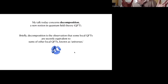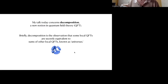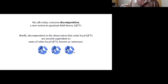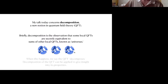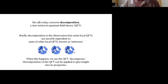My talk today concerns decomposition. What is decomposition? Briefly, decomposition is the observation that some local quantum field theories are secretly equivalent to sums or disjoint unions of other local quantum field theories, which in this context have come to be known as universes. As such, it acts as a sort of counterexample to certain old lore linking locality and cluster decomposition — that's the reason for the name. When one field theory can be written as a sum of others, we say that the field theory decomposes, and then that decomposition can be applied to give insight into its properties.